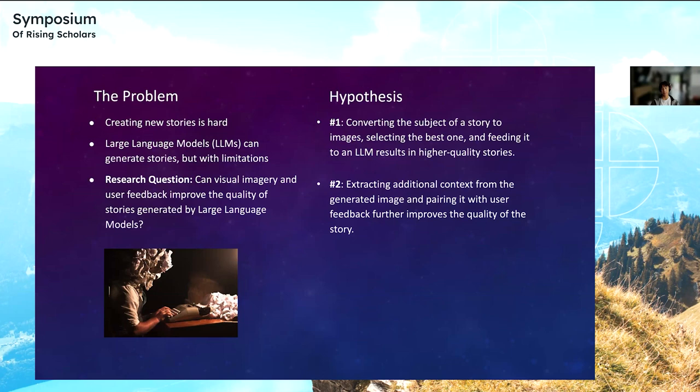One, converting the subject of a story to images, selecting the best one, and feeding it to an LLM results in higher quality stories. Two, extracting additional context from the generated image and pairing it with user feedback further improves the overall quality of the story.